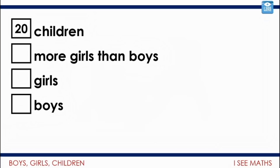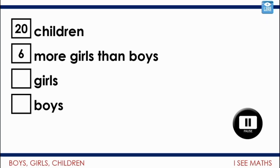I wonder if you can apply that understanding to this question. 20 children at the park — 6 more girls than boys at the park. How many girls must be at the park and how many boys must be at the park? Pause the video. Can you show this with the equipment or the counters that you've got? Could you draw a picture that shows how you can answer this problem? Can you do it in different ways?